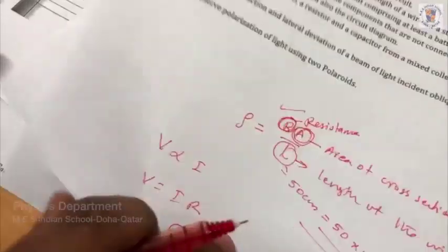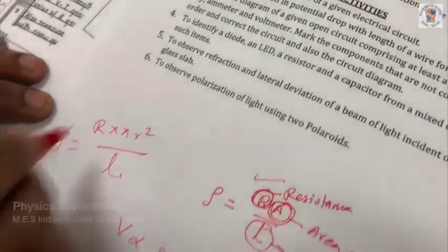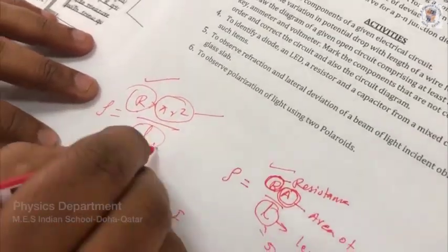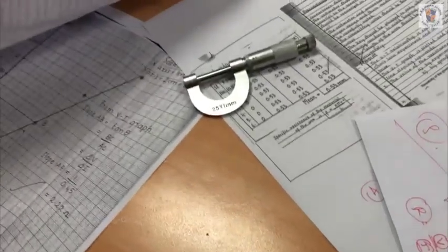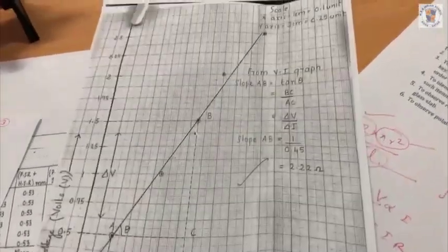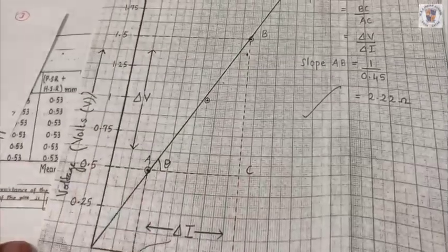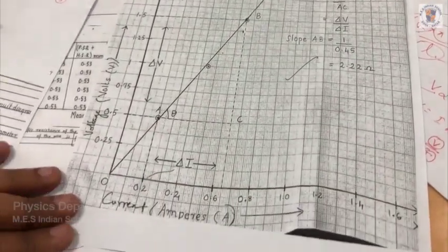Now we can find resistivity: ρ = R × πr² / L. R is found from the Ohm's law circuit, A = πr² from the screw gauge, and L is 50 centimeters. We also draw the voltage-current graph — since V is proportional to I, we get a straight line, and the slope of this graph gives the resistance. This completes our experiment.